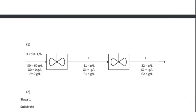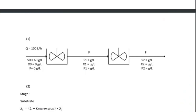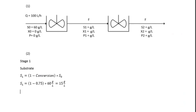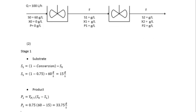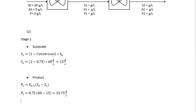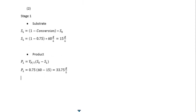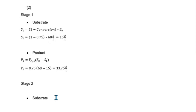I'm going to use Word here for a neat representation and clear formula guidance at each step. For stage one, substrate S1 is calculated as one minus the conversion multiplied by the initial substrate S0. Substituting: (1 − 0.75) × 60 = 15 grams per liter. For the product at stage one, P1 = Y_PS × (S0 − S1). Substituting the known values gives P1 = 33.75 grams per liter.